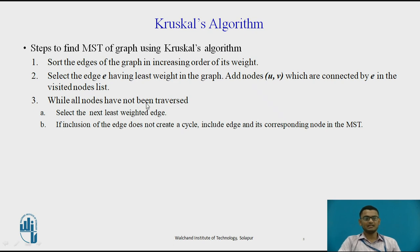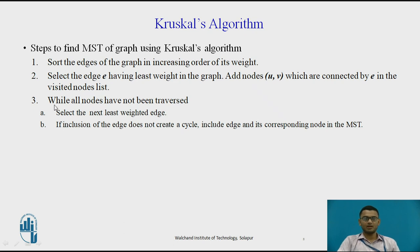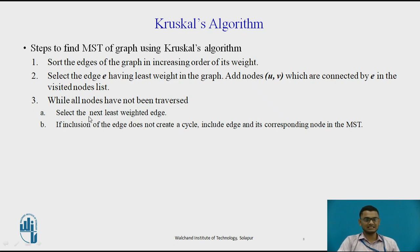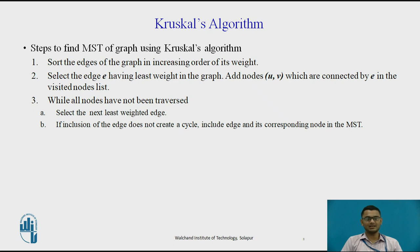We select the edge E having the minimum weight — the least weighted edge — and add its nodes U and V, which are connected by E, to a visited nodes list. The third step is: while all the nodes have not been traversed, that means until the set V of vertices is not completely covered, we select the next least weighted edge. We include that edge — which does not create a cycle — and its corresponding two nodes in the MST.